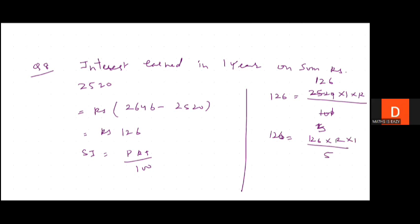So we will put 126 times 1 times 5, which gives us rate equals 5 percent. So we would write: Therefore, rate equal to 5 percent per annum.